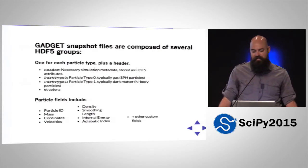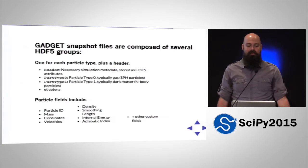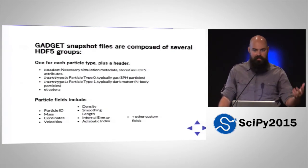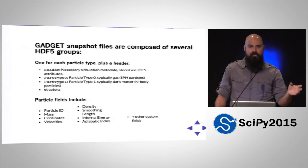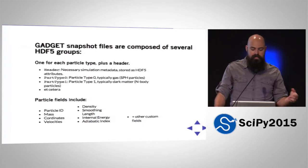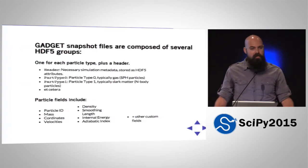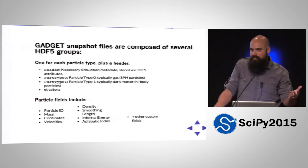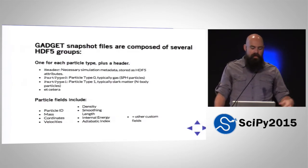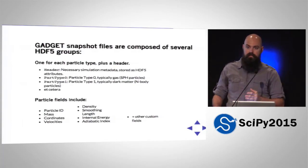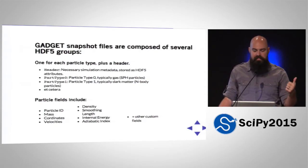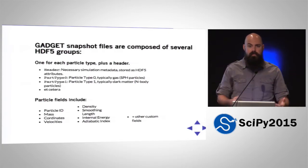Gadget snapshot files are composed of several HDF5 groups — one for each particle type, plus a header. The header contains necessary simulation metadata stored as HDF5 attributes. PartType0 is typically gas/SPH particles, PartType1 is typically dark matter N-body particles, and you can have additional types such as stars. Particle fields include particle ID, masses, coordinates, and velocities for N-body particles; density, smoothing length, internal energy, and adiabatic index for SPH particles; plus a variety of custom fields like chemical abundances.